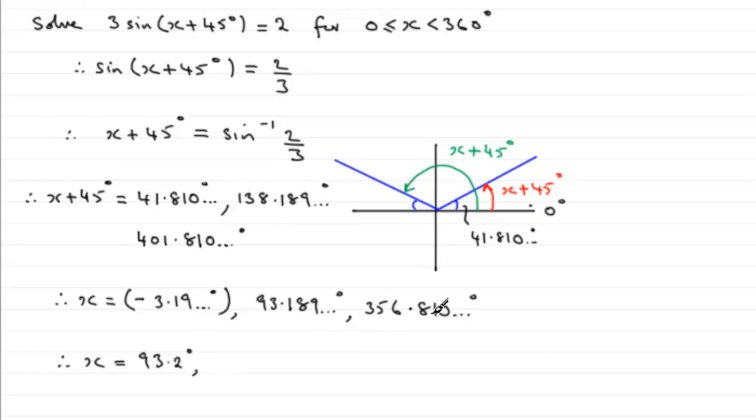And for this one it'll be 356.8 degrees. Both of those are to 1 dp. And I would always encourage you to write something like that even though they ask us to do it to one decimal place.